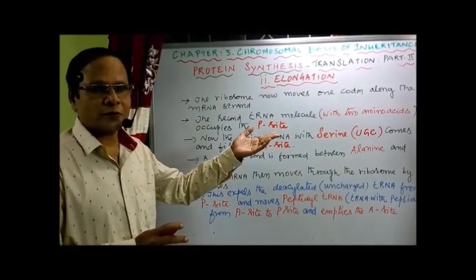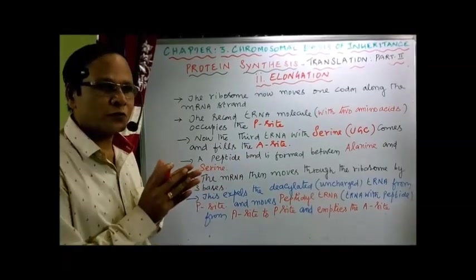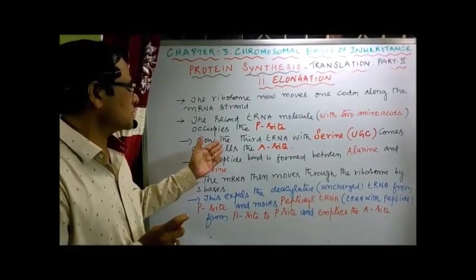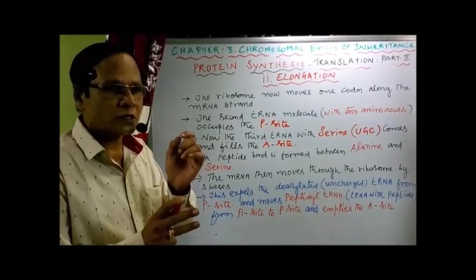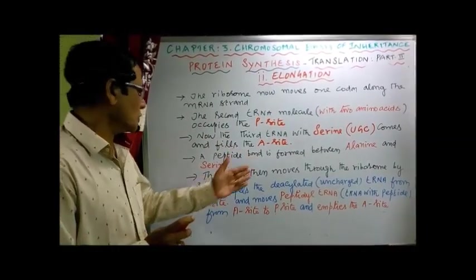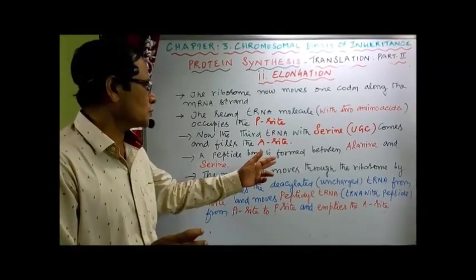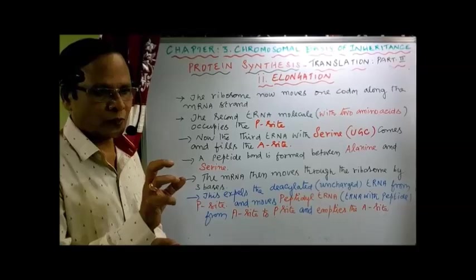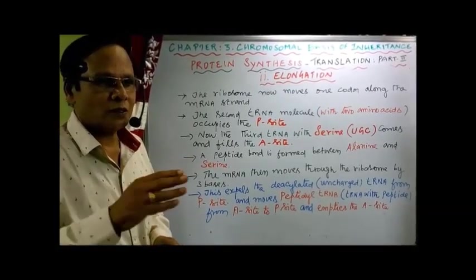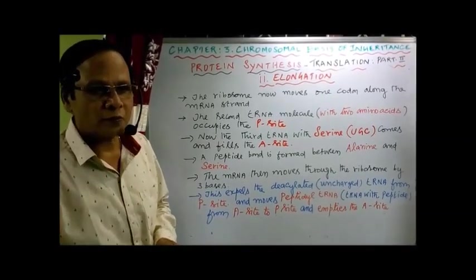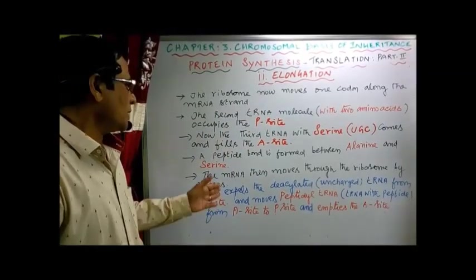The third tRNA carrying amino acid serine comes in — the codon for serine on the mRNA is UGC. It fills the A-site and pairs with the mRNA codon UGC. In the P-site we have the peptidyl tRNA, a tRNA with two amino acids forming a peptide. The mRNA then moves through the ribosome by three nucleotides — that is, one codon — as the ribosome moves along, exposing one codon after another and bringing amino acid-carrying tRNA to pair with each codon.